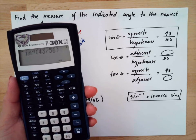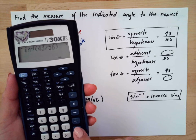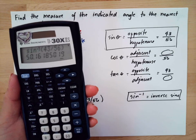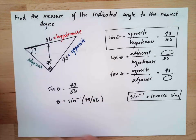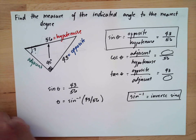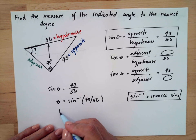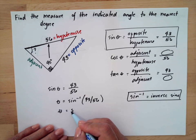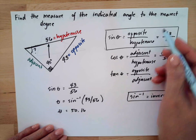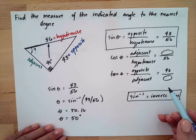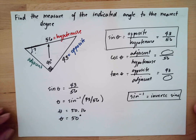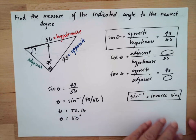That will be equal to 50.16 degrees. Since it says to the nearest degree, therefore this will be 50 degrees. That is how you solve this problem.